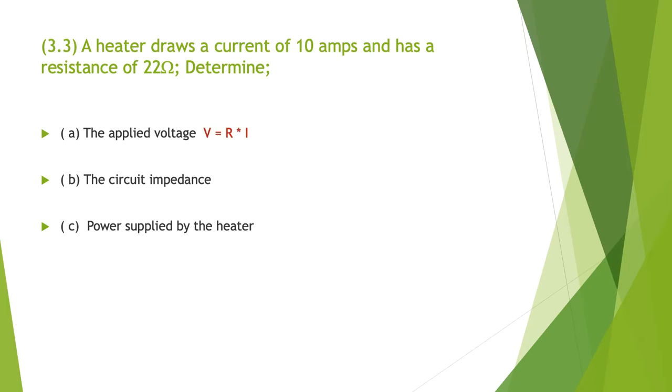The applied voltage, again straight Ohm's law: volts equals R times I or volts equals Z times I. We've got our 10 amps multiplied by our 22 ohms giving us 220 volts.